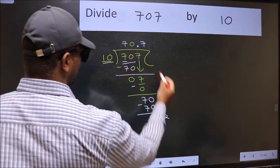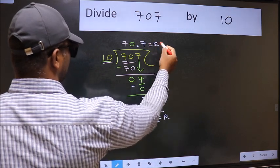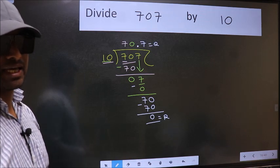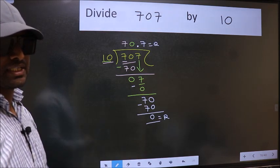This is our remainder, and this is our quotient. Did you understand where the mistake happens? You should not do that mistake.